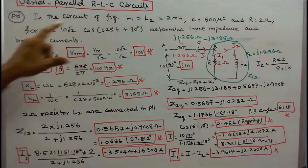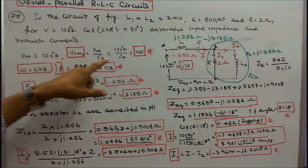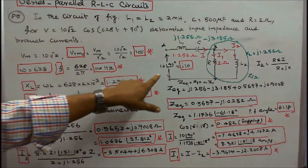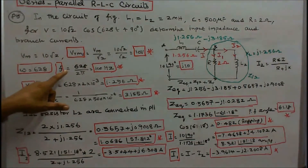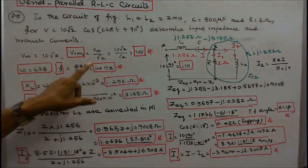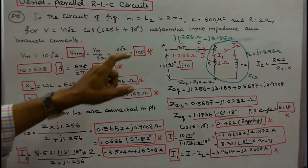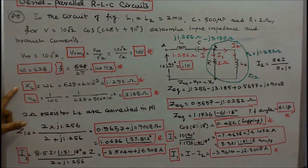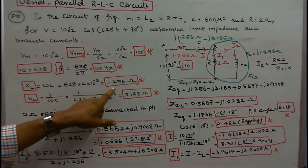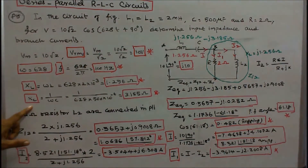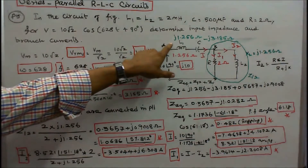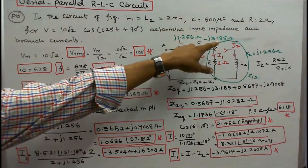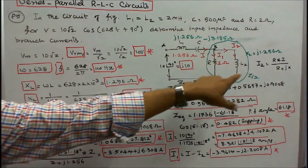The maximum voltage is 10√2, so V_RMS = V_max / √2 = 10 volts. The angle is 90°, so the applied voltage is 10∠90° or j10. Omega is given as 628 rad/s, so frequency = 628 / 2π = 100 Hz. Inductive reactance XL = ω·L = 1.256 ohms. Capacitive reactance XC = 1/(ω·C) = 3.185 ohms. So the capacitor branch is −j3.185 ohms and each inductor branch is j1.256 ohms. R = 2 ohms.